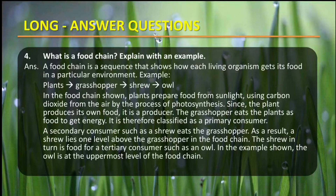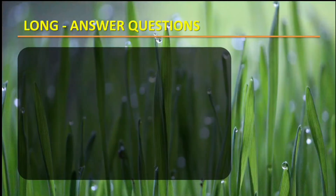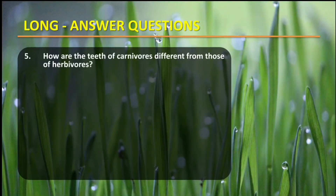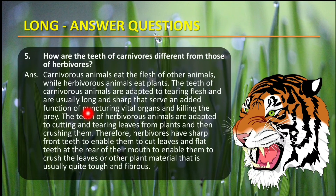Fifth question: How are the teeth of carnivores different from those of herbivores? Carnivore animals eat the flesh of other animals while herbivore animals eat plants. The teeth of carnivore animals are adapted to tearing flesh — they are usually long and sharp and serve the added function of puncturing vital organs and killing the prey.